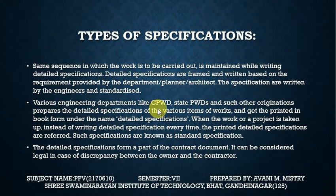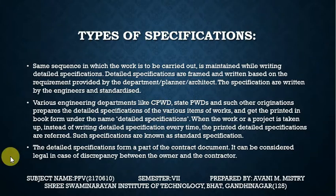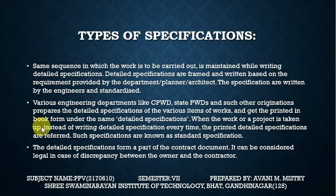Various engineering departments like CPWD, state PWD, and other organizations prepare the detailed specification of the various items of the work and get it printed in book form under the name 'detailed specification.' When a work or project is taken up, instead of writing the detailed specification every time, the printed detailed specifications are referred to and are known as standard specification.